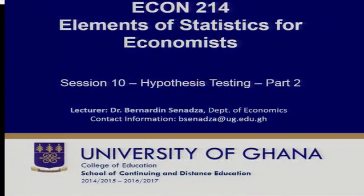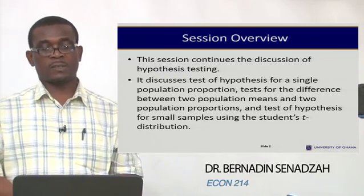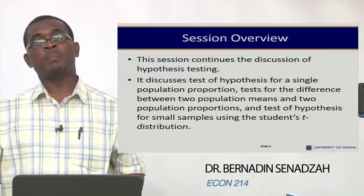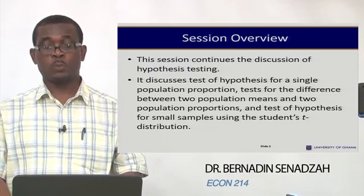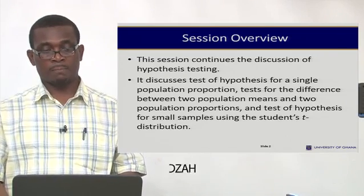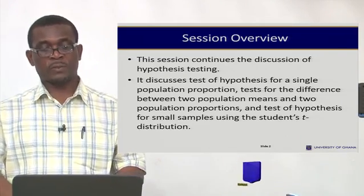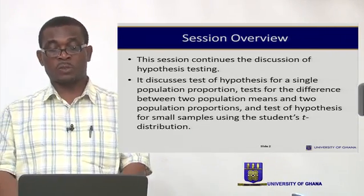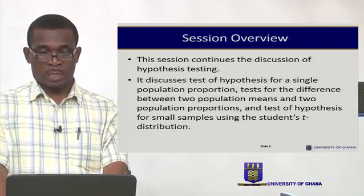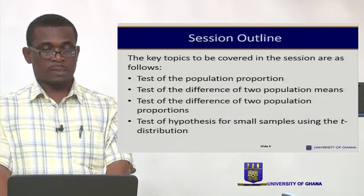Hello and welcome to the concluding session of ACON 214, part 2 of hypothesis testing. In this session, we'll discuss test of hypothesis for a single population proportion, test for the difference between two population means, and then the difference between two population proportions, and test of hypothesis for small samples using the student's t distribution.